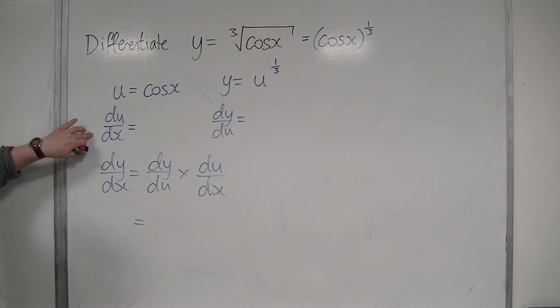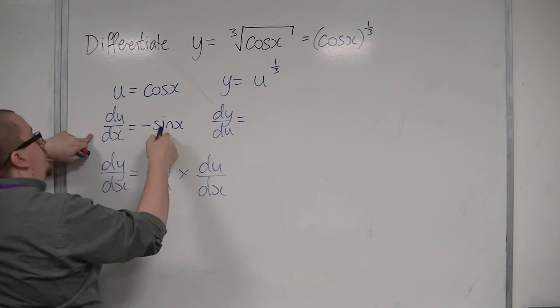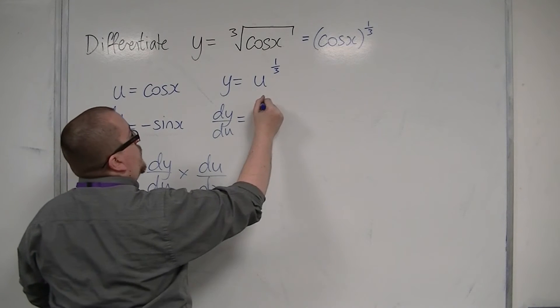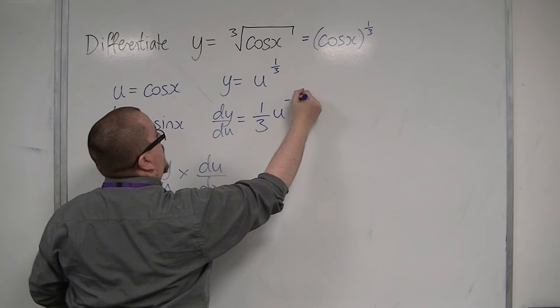du/dx will be minus sine x - cosine differentiates to minus sine - and dy/du will be one third u, and then take one from the power, so minus two thirds.